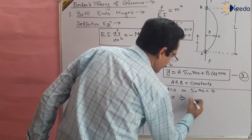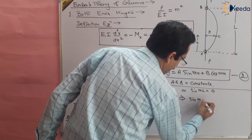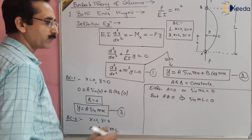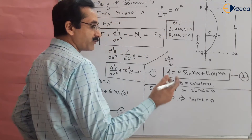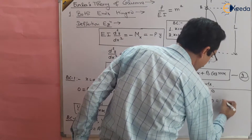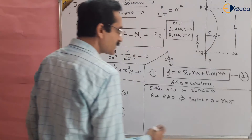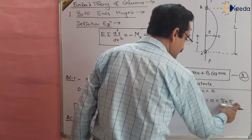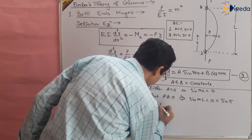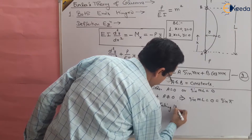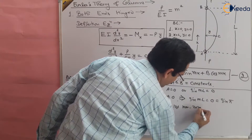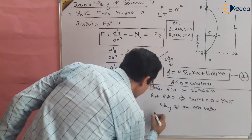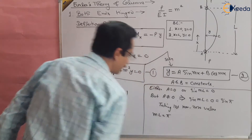Since sin(mL) = 0, and we take the first non-trivial zero value, which is π, we get mL = π. This gives m²L² = π².